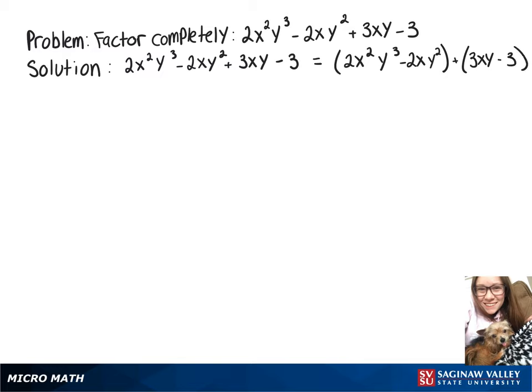So with our first group, we can factor out 2xy squared, and then we're left with xy minus 1.